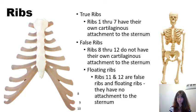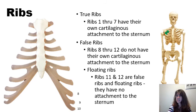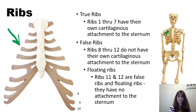Each of the 12 thoracic vertebrae have ribs attached to them posteriorly. Most of the ribs curve around anteriorly to form the thoracic cage. The first seven ribs for T1 through T7 each have their own cartilaginous attachment to the sternum — they attach to hyaline cartilage known as costal cartilage. You can see this costal cartilage on the left-hand side of the screen. Ribs one through seven have their own individual cartilaginous attachment to the sternum by way of this costal cartilage.